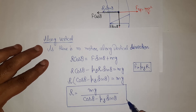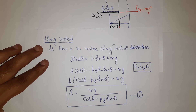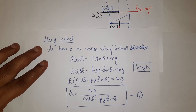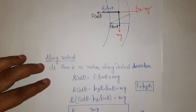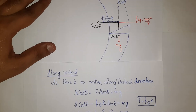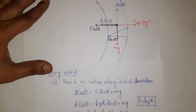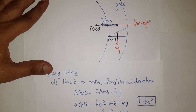From this we get the value of normal reaction: R = mg / (cosθ − μs·sinθ). Name this as Equation 1, obtained by considering motion along the vertical.